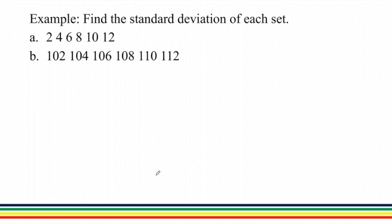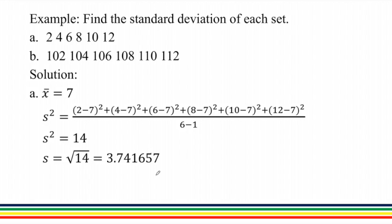For example, let's find the standard deviation of this data set: 2, 4, 6, 8, 10, and 12. Let's find first the mean. The mean is 7. And the variance is the first term minus the mean squared plus the second term minus the mean squared plus the third minus the mean quantity squared and so on divided by 6 minus 1, which is n minus 1. Therefore, our variance is 14 and our standard deviation is equivalent to 3.741657, which is the square root of 14.